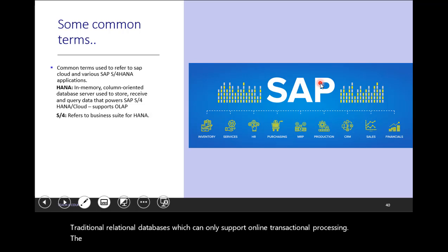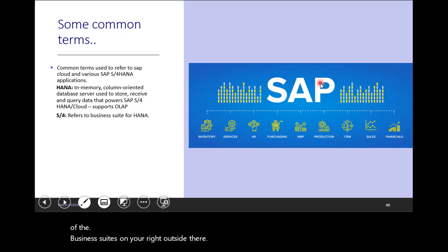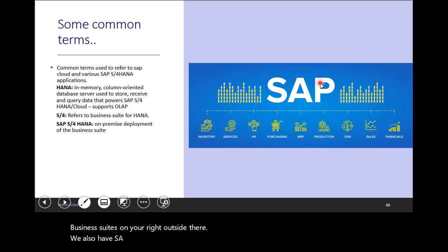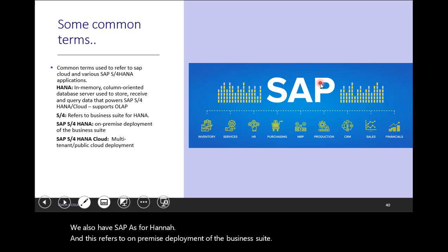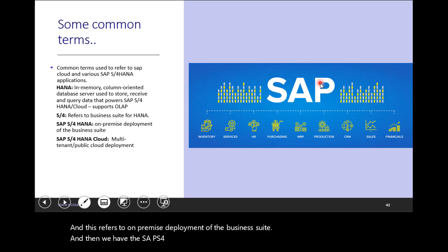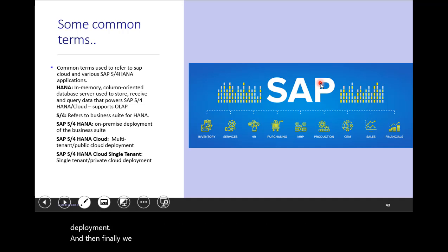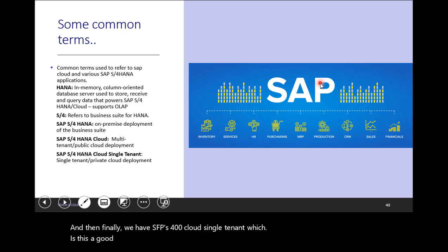The next key term is S4, and this refers to the business suite for HANA. You can see some of the business suites on your right-hand side. We also have SAP S4HANA, which refers to on-premise deployment of the business suite. And then we have SAP S4HANA Cloud, which is the multi-tenant public cloud deployment. Finally, we have SAP S4HANA Cloud SQL tenant, which is a SQL tenant private cloud deployment.